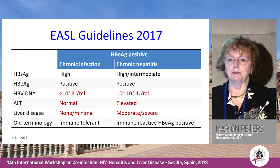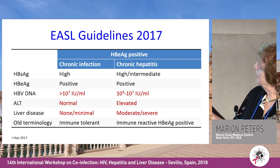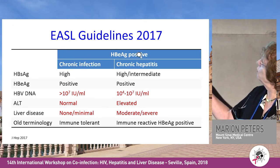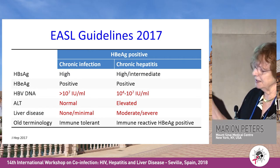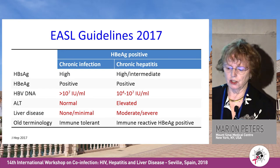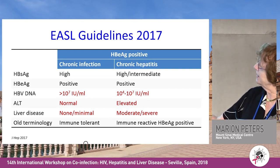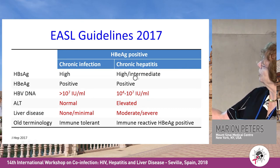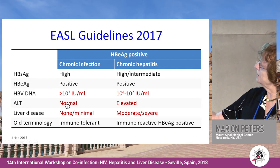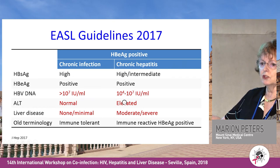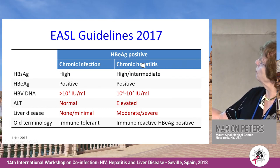The EASL guidelines, which came out last year, differentiate chronic infection from chronic hepatitis. Both have surface antigen and E antigen in E antigen-positive disease. The distinction is in HBV DNA — highest in chronic infection, less high in chronic hepatitis — and in ALT and liver disease: normal ALT without liver disease in chronic infection, versus elevated ALT with moderate or severe liver disease in chronic hepatitis. You only treat those with chronic hepatitis.